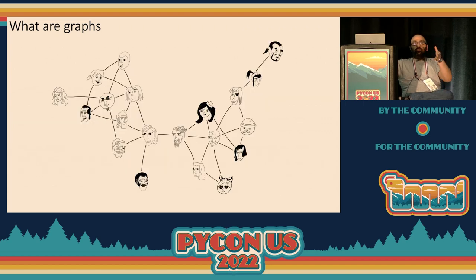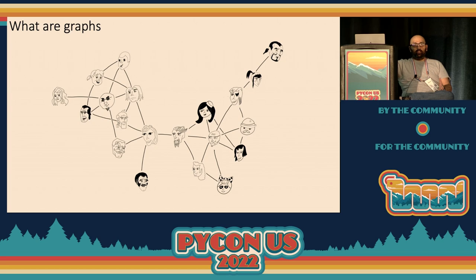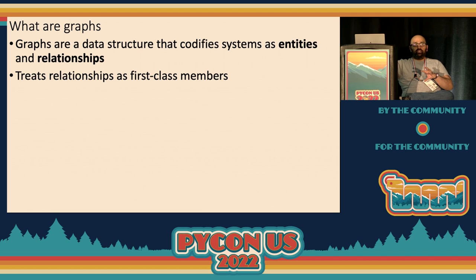I'd rather motivate graphs by asking you about your friend group. If I asked you about your friend group, you probably wouldn't give me a bullet point list of names, dates of birth, and heights. You're more likely to tell me a story like: 'This is my friend Alice, who I met through our mutual friend Bob at a party thrown by Claire, where I lost a whole bunch of money to my friends Dan and Ellen.' You're describing people and the relationships you have with them. And that's what's really exciting about graphs — they're a data structure that can codify systems as entities and relationships.